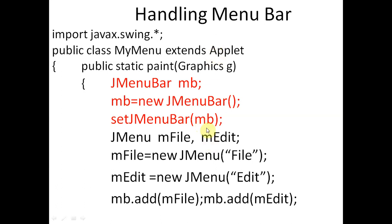Before creating the menu bar items, we create menus: JMenu mFile and JMenu mEdit — two objects. mFile = new JMenu("File") and mEdit = new JMenu("Edit"). We have two menus: File and Edit. We add them to the menu bar: mb.add(mFile) and mb.add(mEdit). Now we have two menu items on the menu bar.